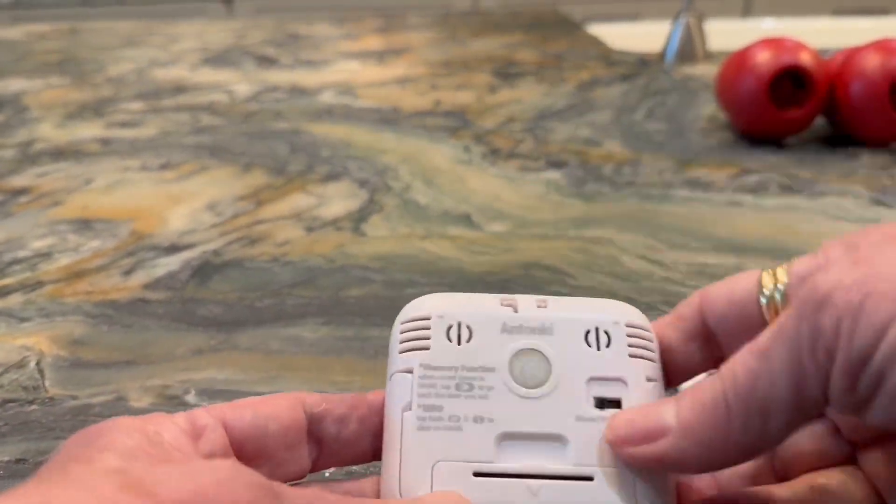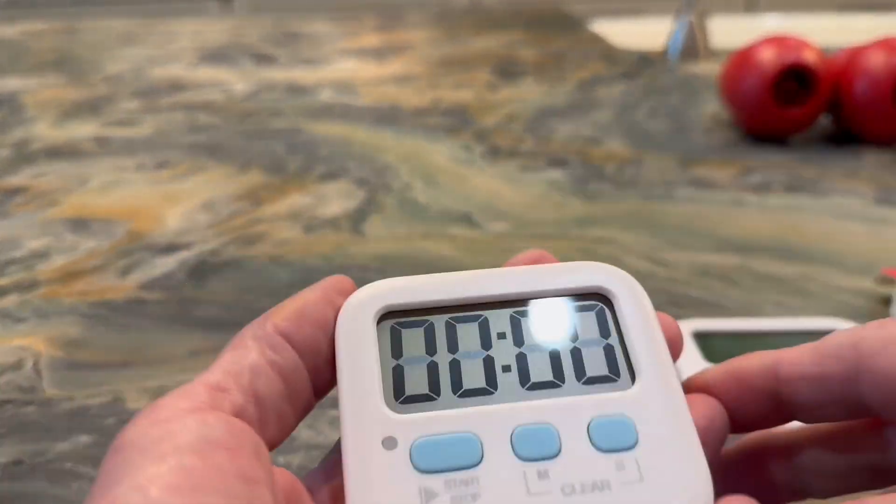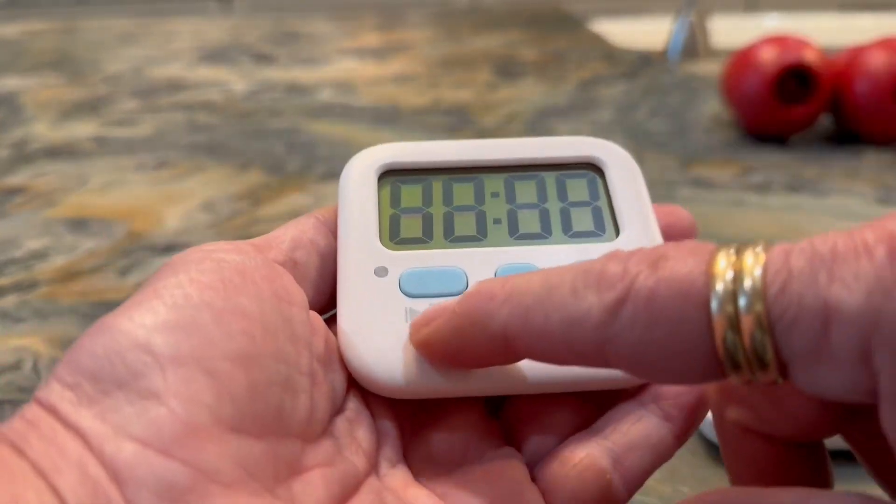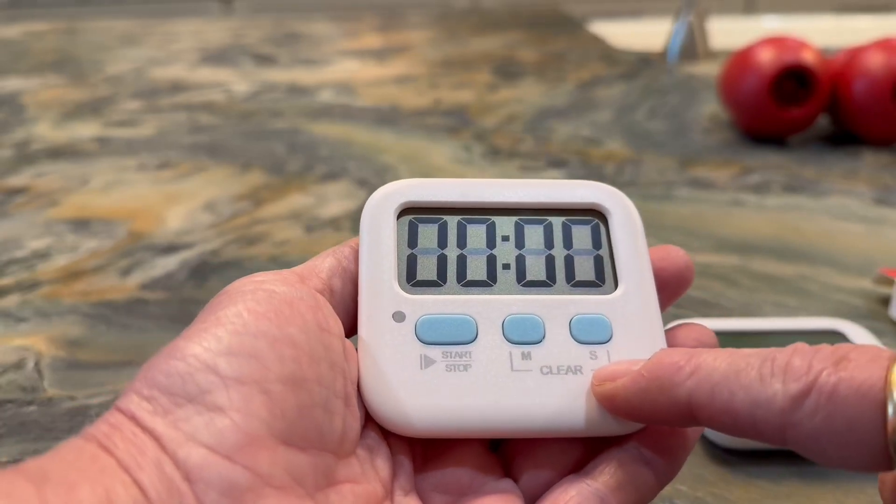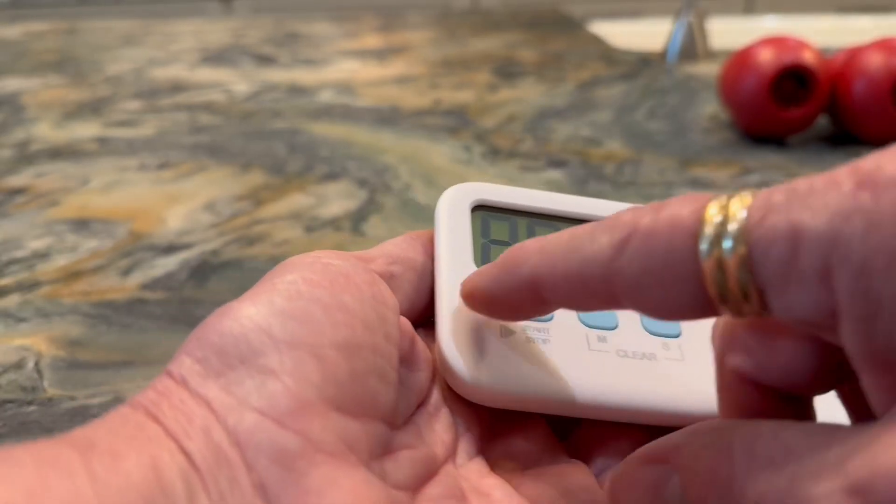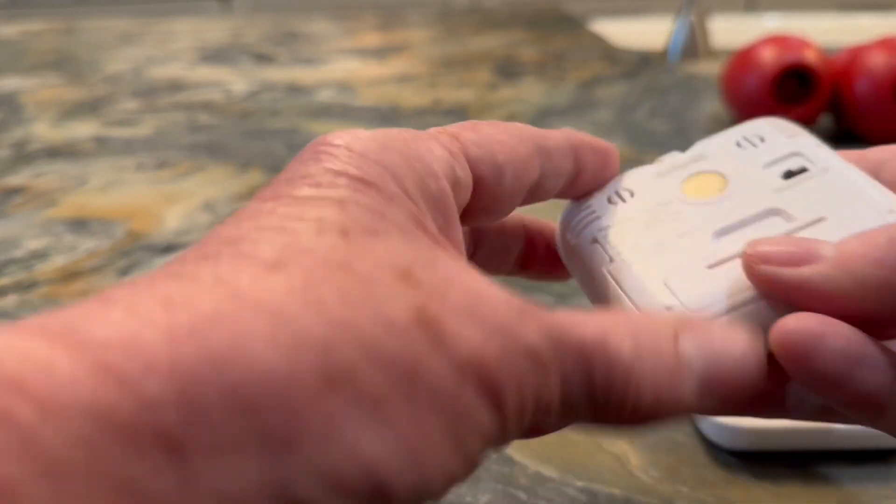This is the back of it, and this is what the front looks like. The front has, as you can see, a start/stop button here, minutes and seconds, and then there's a clear button.